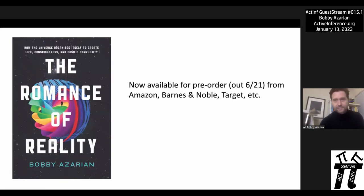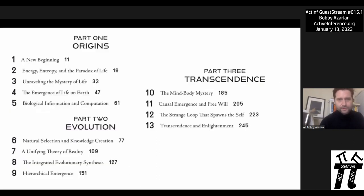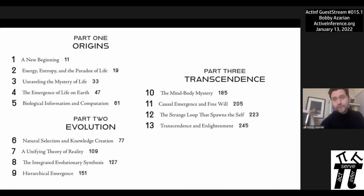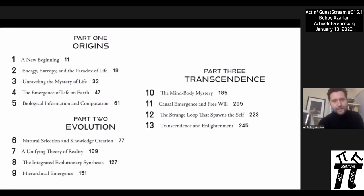This is the book I've spent the last two to three years writing obsessively, and it's available for pre-order now. The book is broken into three sections: part one talks about the origins of life, part two about evolution, while part three focuses on consciousness, free will, and the fate of life in the universe. Today we'll focus on a superficial overview of part two.